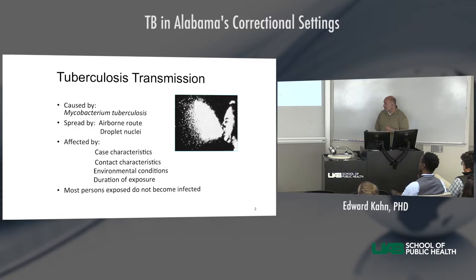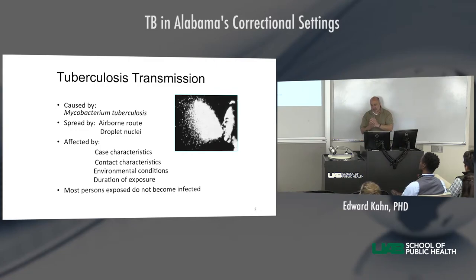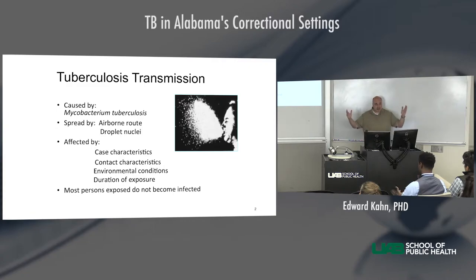Environmental conditions are a key factor — what the setting is for transmission. We're in a big room right now that's well aerated and brightly lit. If I have TB and I'm talking and coughing during this next hour, chances are nobody's going to get it because of the conditions here. Whereas in a smaller, more dense, poor-circulation situation, there's going to be much higher transmission.